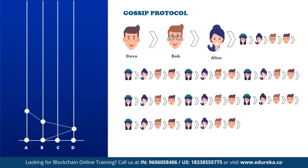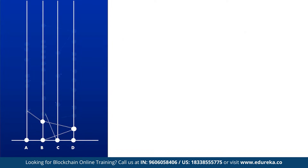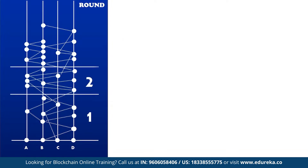Each event contains the hashes of the event below it and is digitally signed by its creator, so the entire graph of hashes is cryptographically secure. It can always grow, but the older parents are immutable and as strong as the cryptographic hash and signature system used. It is useful to define a round created for each event. A child never has a round created before one of its parents, so as time flows upwards in the diagram, the round created can only stay the same or increase. As soon as you receive an event in sync, you can immediately calculate its round created.